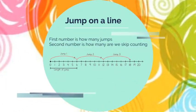How do we use our number line? First number is how many jumps. Second number is how many we're going to skip count to get to that number.